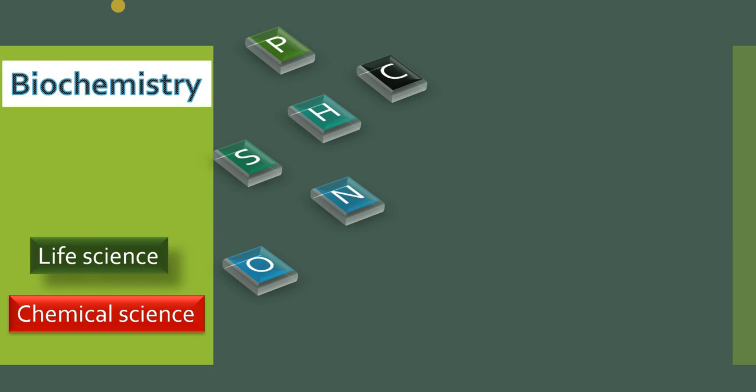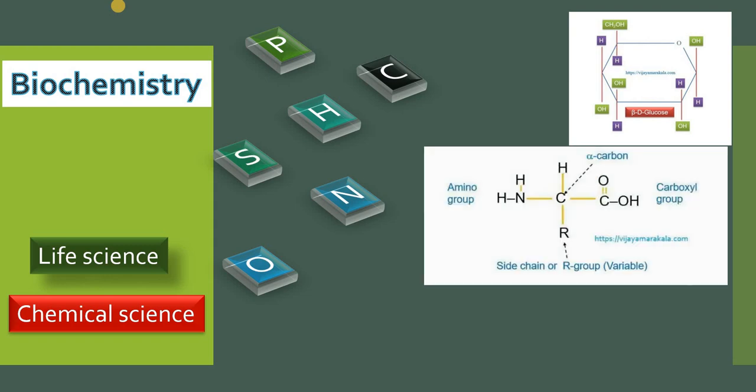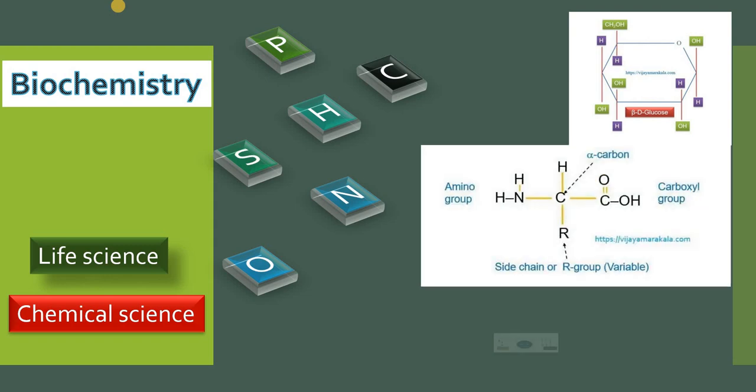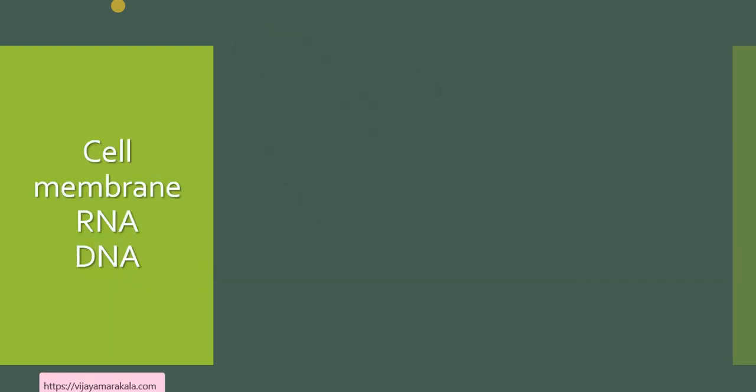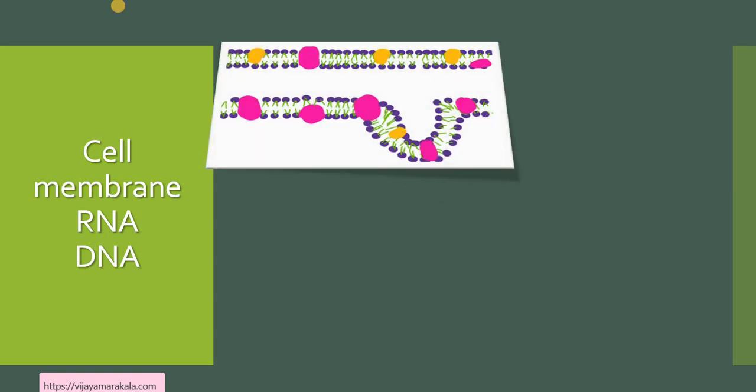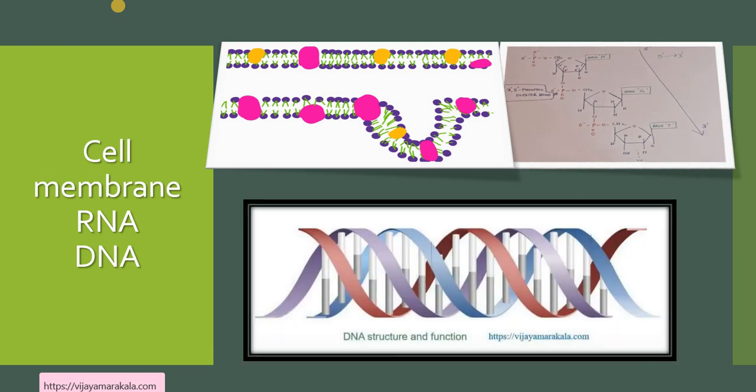These chemicals will arrange in such a way that they will form compounds or molecules or macromolecules like carbohydrates, amino acids, they will make proteins and lipids. All these compounds are arranged in such a way that they will make a cell membrane, they will make RNA and the genetic information which is DNA. So all these complex compounds contain all these chemical elements. That is chemistry.